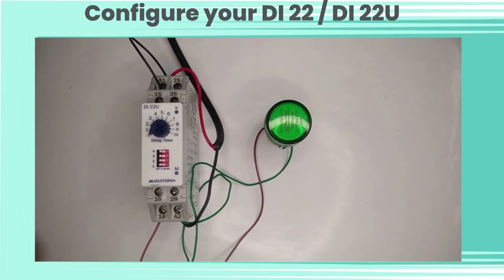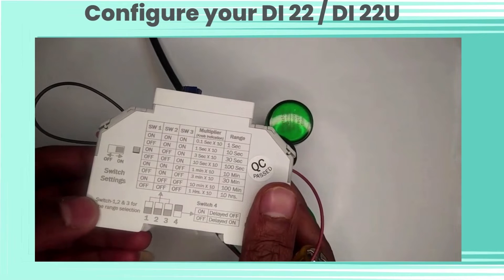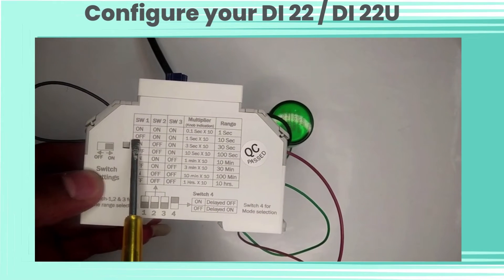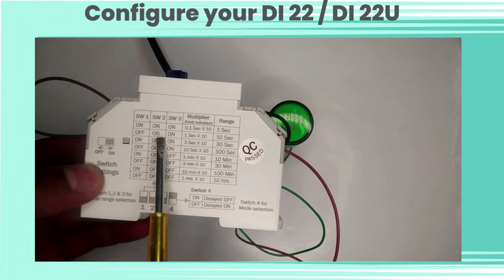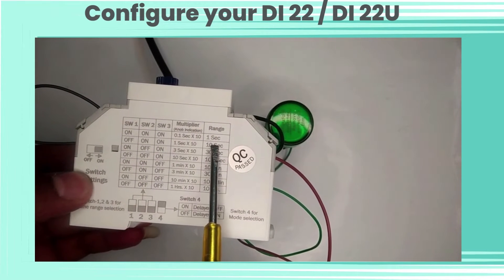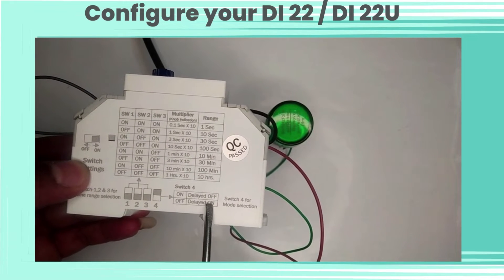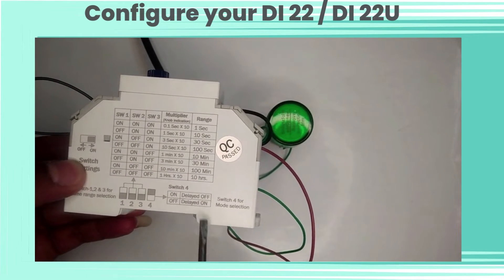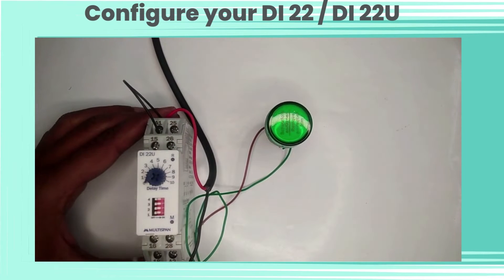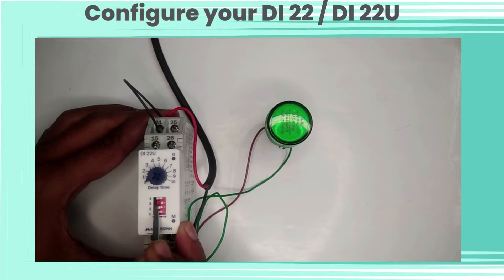Now let's configure the DI22U. For various time selections, we have three switches available. Here we are going to select a switch for 10-second timing. For 10-second switch selection, we have to change the status according to our switch chart. From switch 4, we can change the switch condition for delayed off or delayed on.